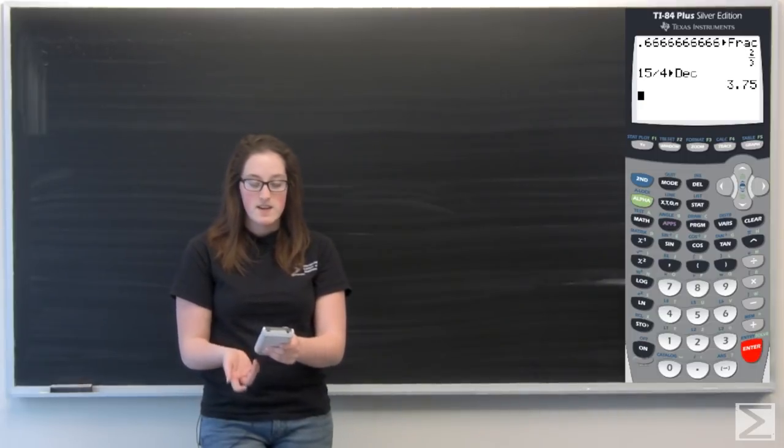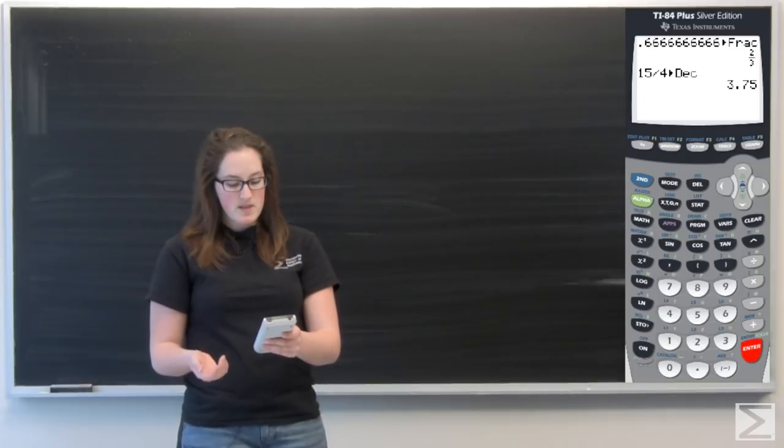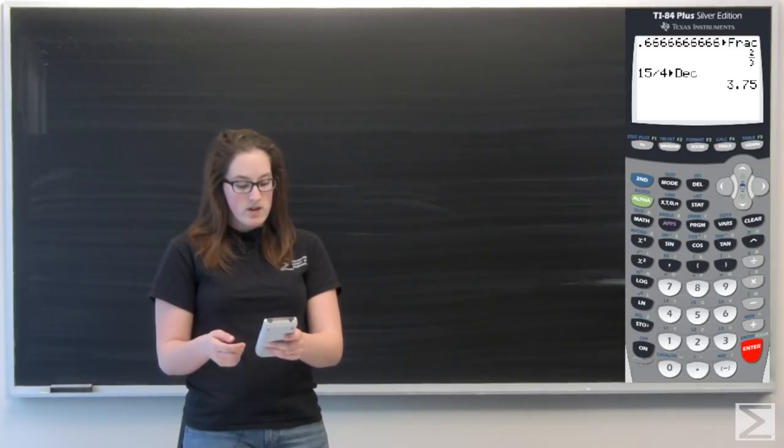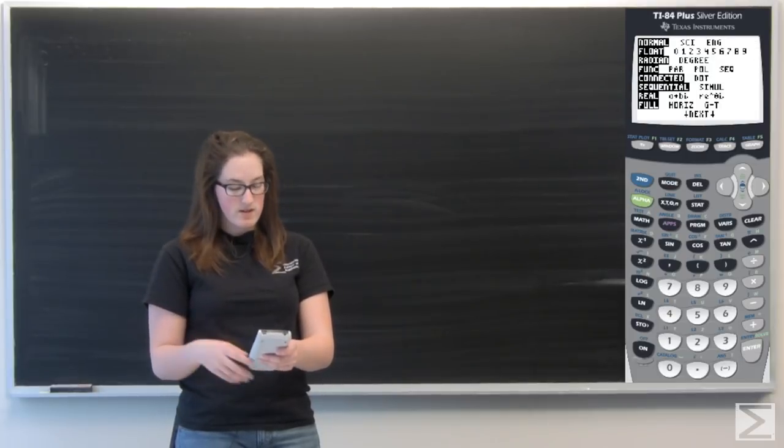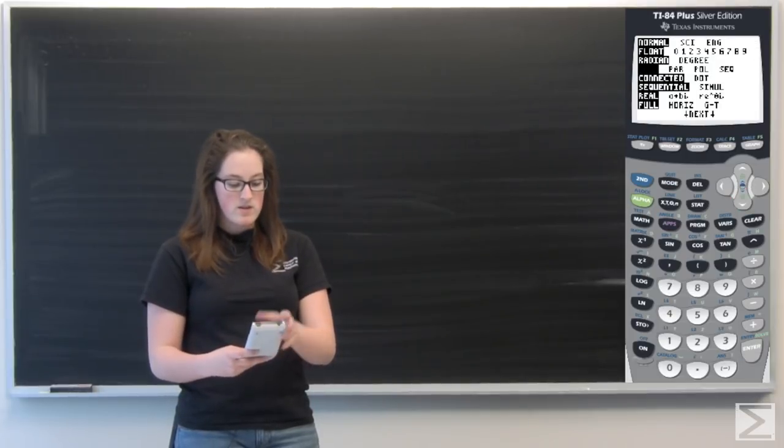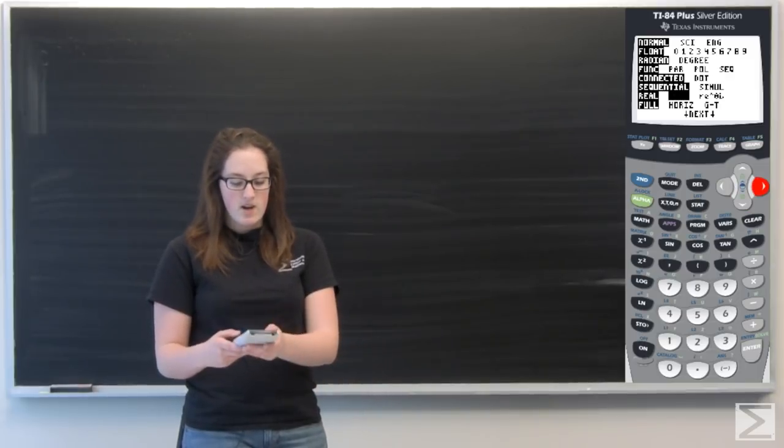And then the next thing I'm going to talk about is the modes on your calculator. So if you go to mode, you probably have real selected. But if you select, it says A plus B I, complex numbers, that can help you out a lot.